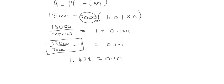And then if you divide by 0.1 to get N by itself, you're going to get 11.43. That means it will take 11.43 years for that amount to grow from 7,000 to 15,000.